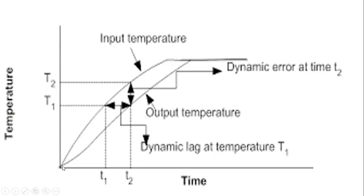The instrument output temperature varies over time and eventually attains a steady-state value. The change in the vertical scale — T2 minus T1 — gives the dynamic error, whereas the change in the horizontal scale gives the dynamic lag (time lag).